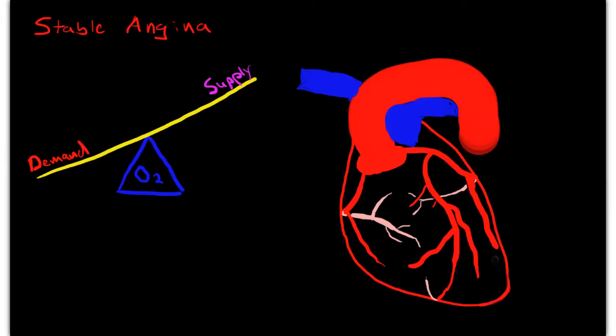In this video you will learn about stable angina and how it's caused by an imbalance between the oxygen supply and demand to the myocardium or the heart muscle, and how this is caused by a stable plaque or an atheroma that is causing the coronary arteries to be partially constricted and causing reversible ischemia that occurs with exercise but resolves at rest.